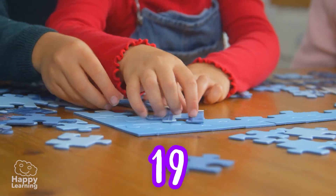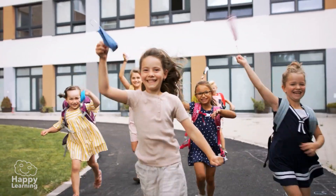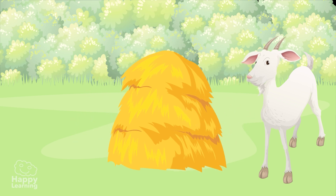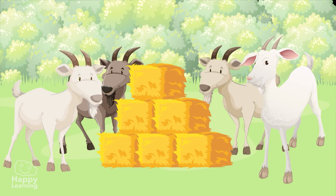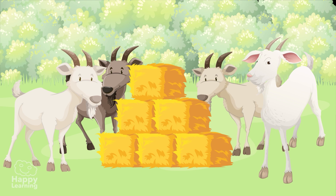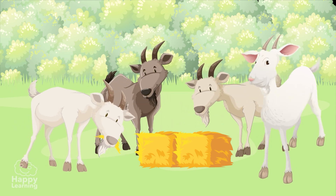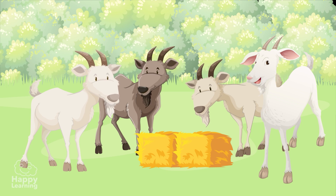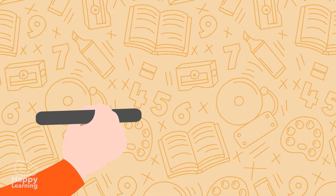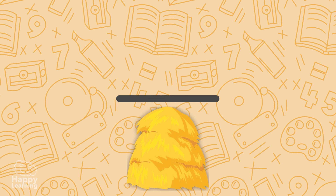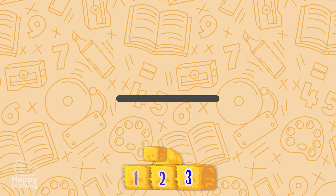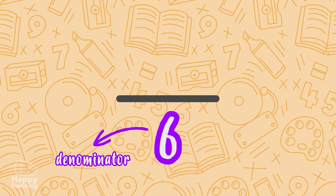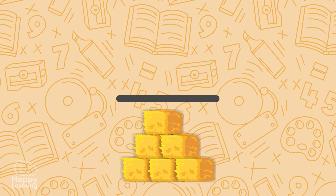Now let's take another example. Let's suppose I have this pile of fresh straw, and I'm going to divide it into six equal parts. The goats seem eager! The first thing we have to do is see how many parts the whole number — in this case the pile of straw — has been divided into. We put that number at the bottom in the denominator, and in our case it is six, because we divided the straw into six equal pieces.